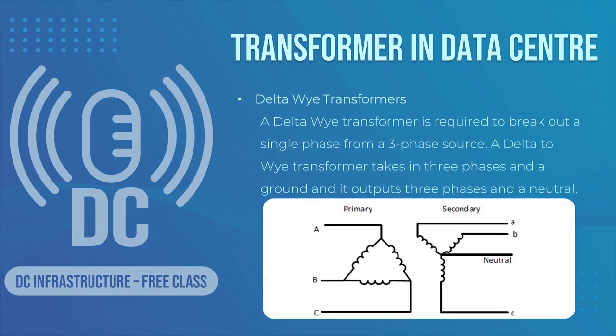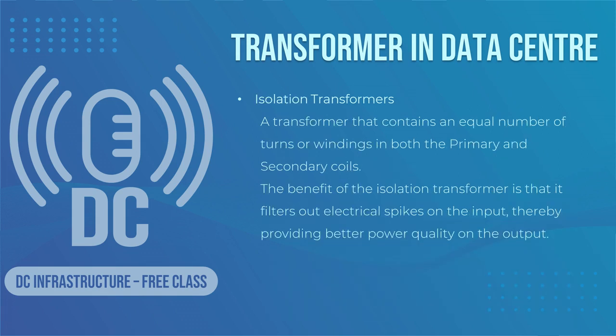A delta-Y transformer is required to break out a single phase from a three-phase source. A delta-to-Y transformer takes in three phases and a ground, and it outputs three phases and a neutral. This transformer is usually found in the PDU panel.